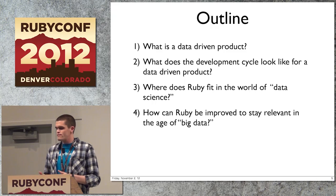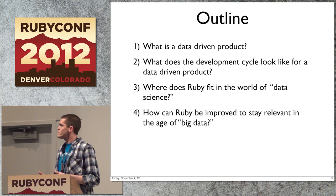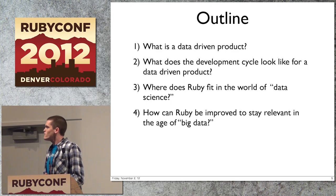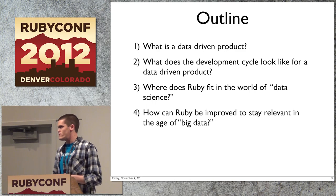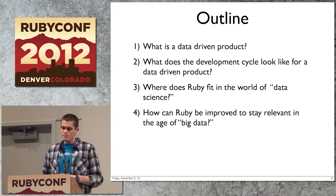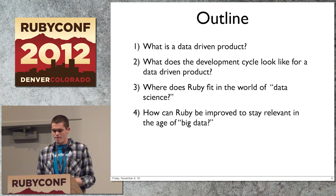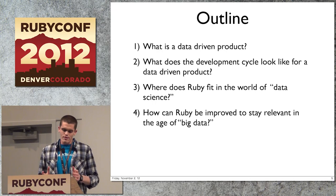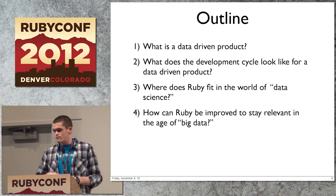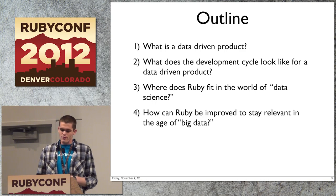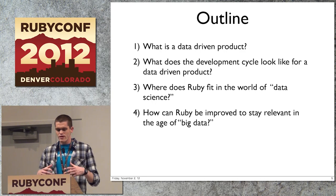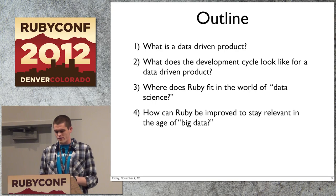My goal for this talk is to help you answer four questions: What is a data-driven product? What does the development cycle look like for a data-driven product? Where does Ruby fit in this new world of data science? And how can Ruby be improved to stay relevant in the age of big data? I'm not going to talk about support vector machines, regression types, or principal component analysis — this is really about how Ruby fits in and how we build data-driven products as a whole.